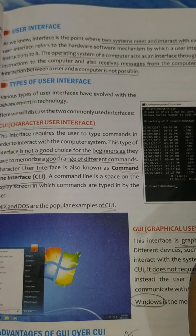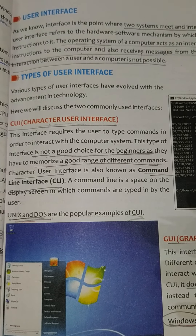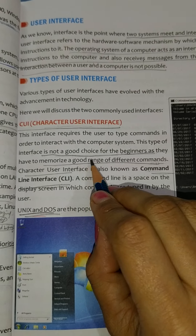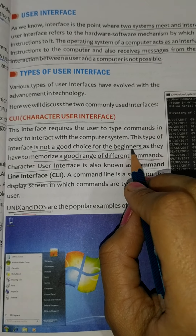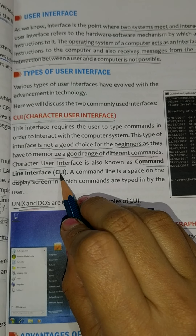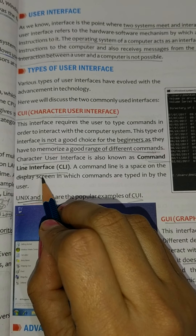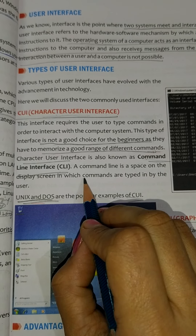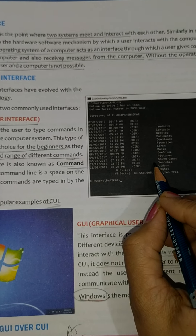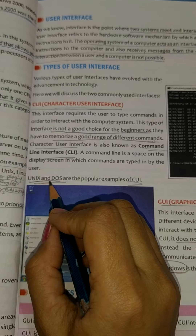You cannot simply double click on an icon. You have to type the command for whatever you want. If you want to see any file or create a file, everything has to be done through commands. So it is not a good choice for beginners. Another name of CUI is Command Line Interface, that is CLI. A command line is a space on the display screen where commands are typed by the user. DOS and UNIX are the examples.